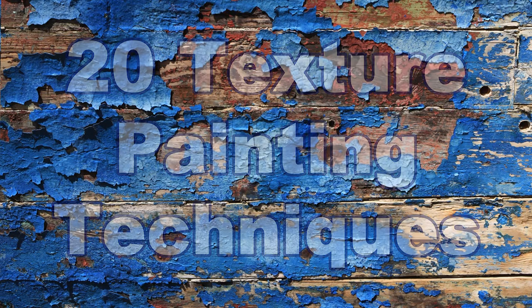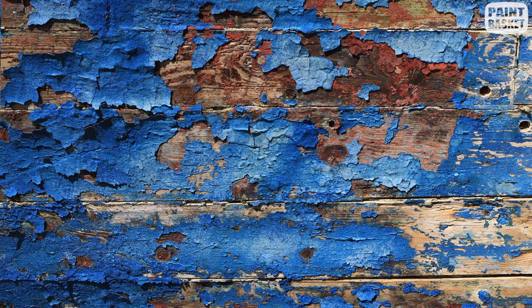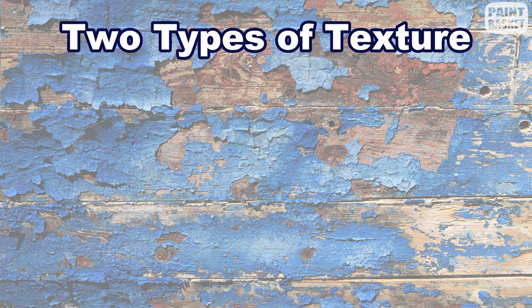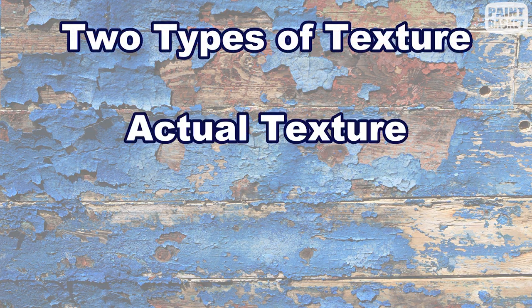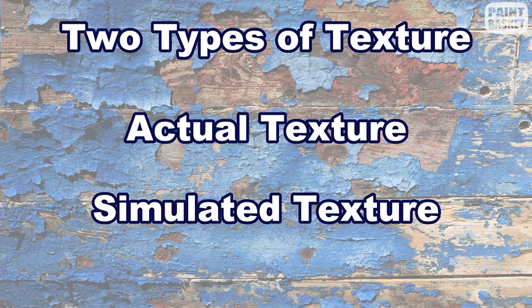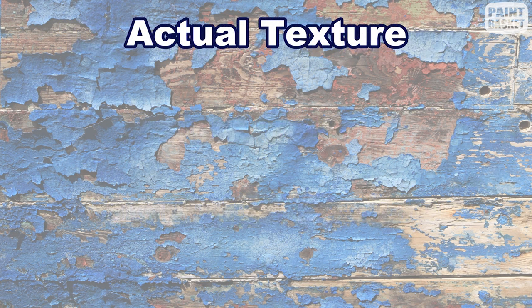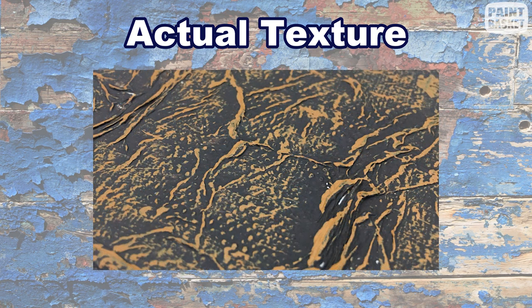In this challenge tutorial you will learn about adding texture to your paintings. There are two types of textures: actual texture and simulated texture. Actual texture is a genuine three-dimensional texture on your canvas — most times this texture will be height off the canvas surface which you can feel.